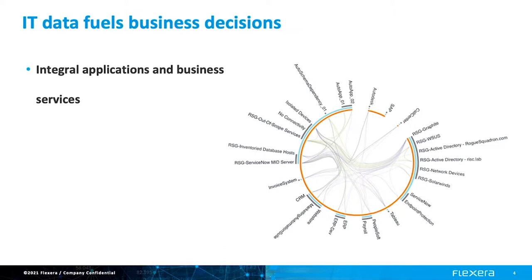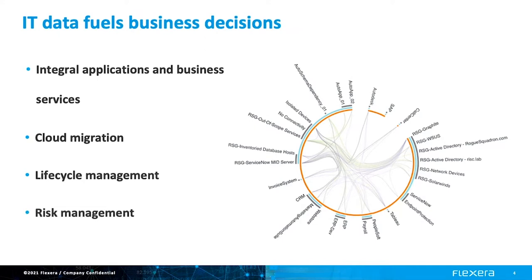Those halted decisions include: understanding which business services are most integral to the organization and those that generate the most revenue in order to improve performance; knowing which workloads should be moved to the cloud; upgrading or replacing applications that are end of life or end of support and are opening risk to the organization; and mitigating other risk factors such as vulnerabilities through patching and updating.